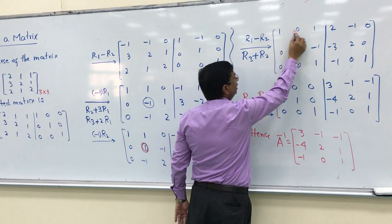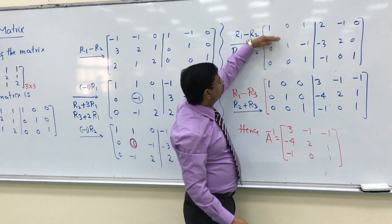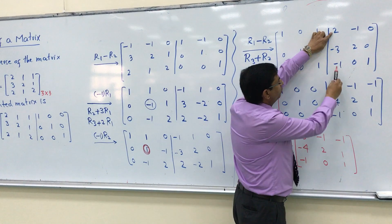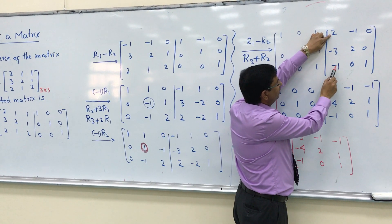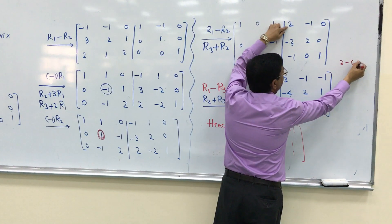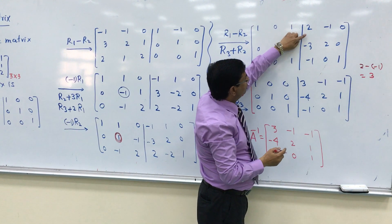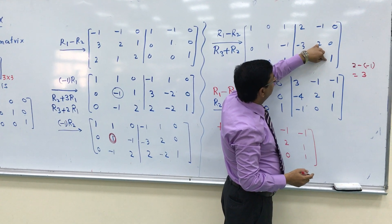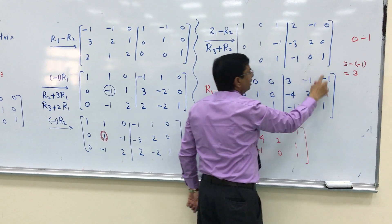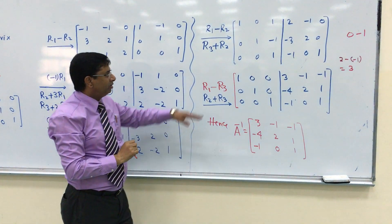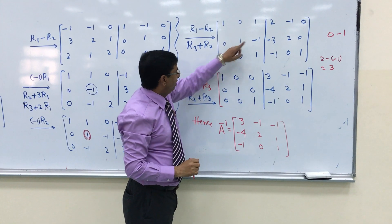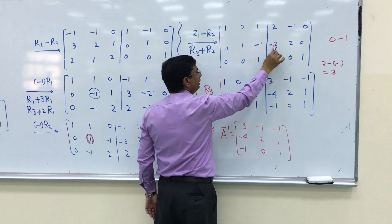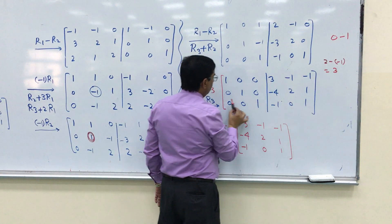I perform R1 minus R3: 1 minus 1 gives 0; 2 minus negative 1 gives 3; negative 1 minus 0 gives negative 1; and 0 minus 1 gives negative 1. Then R2 plus R3: add the third row to R2 — 0 plus negative 4 gives negative 4 entry; plus 2; plus 1. No change in R3.